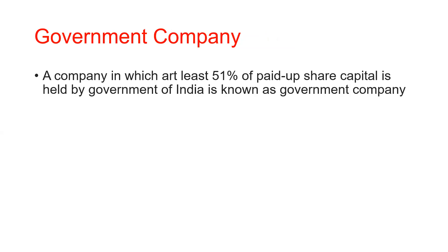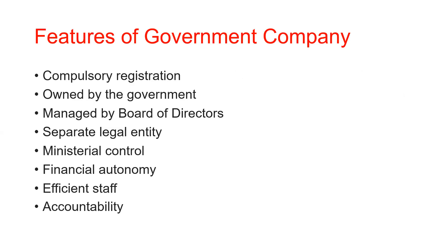Now the third type — government company. A government company refers to those companies where the government has at least 51 percent of the paid-up share capital. That means at least 51 percent of investment is from the government, ensuring control lies with the government. Examples include Steel Authority of India and Hindustan Machine Tools.